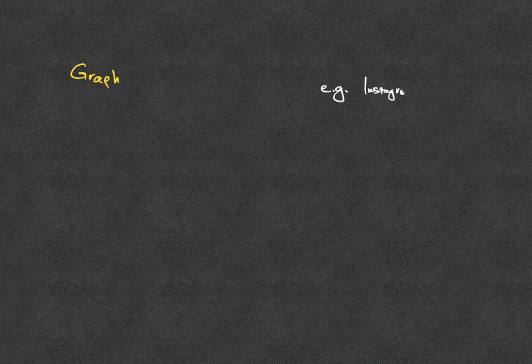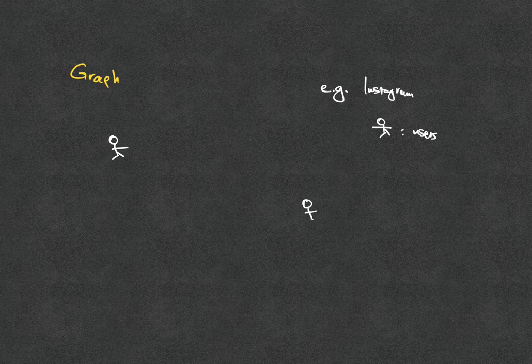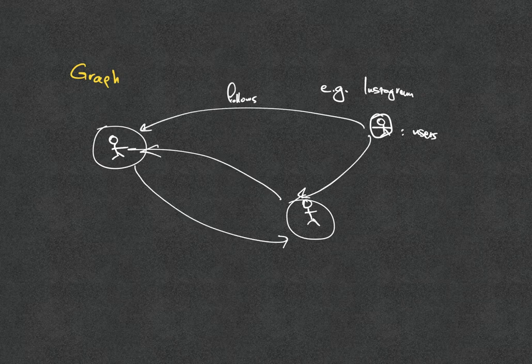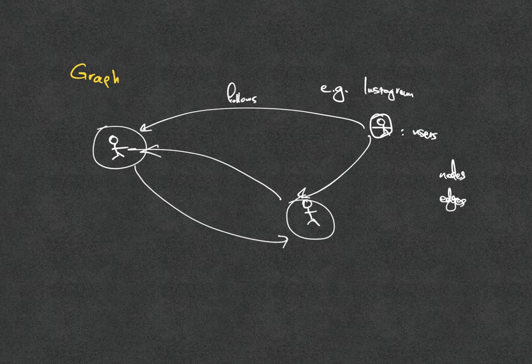Let us start with the definition of a graph. A graph is a collection of objects. For example, in the case of something like Instagram, objects are Instagram users. Each one of these objects or users gives us a node. And then there are interactions between these nodes. Roughly speaking, a graph is a collection of nodes and edges that have to do with the objects and the relationships between the objects.